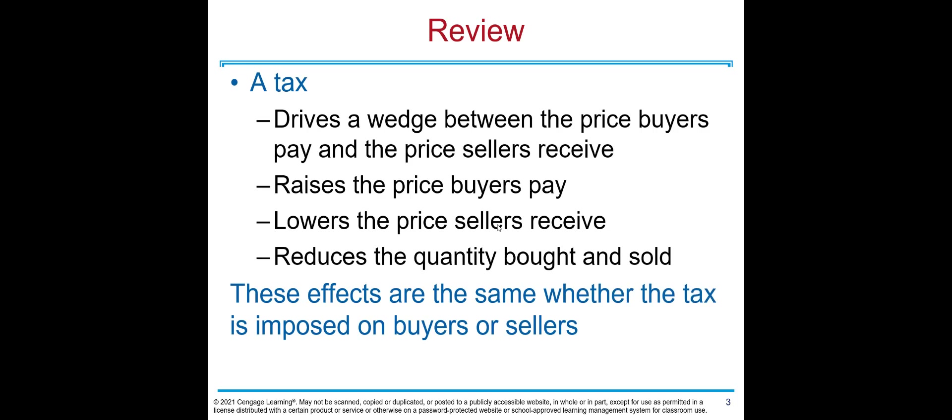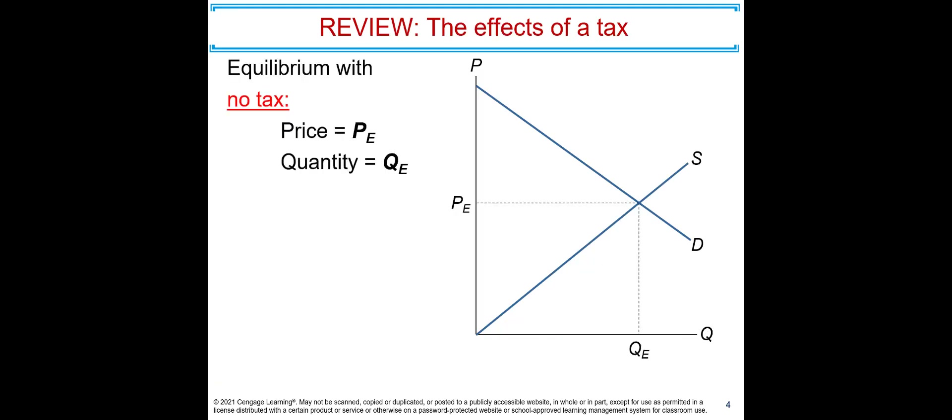Let's do a quick review. A tax drives a wedge between the price buyers pay and the price sellers receive. It raises the price buyers pay, lowers the price sellers receive, and reduces the quantity bought and sold. These effects are the same whether the tax is imposed on buyers or sellers.